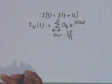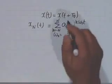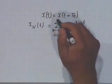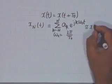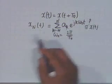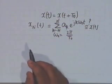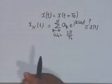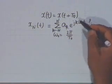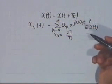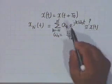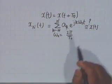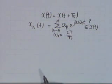Forget about Fourier series for now. What we wish to do is: given a periodic function, we wish to approximate it by a finite series of the form of Fourier. That is, we take the fundamental frequency, the second harmonic, third harmonic, and so on up to the nth harmonic. What kind of approximation is this? That is the question we are asking.